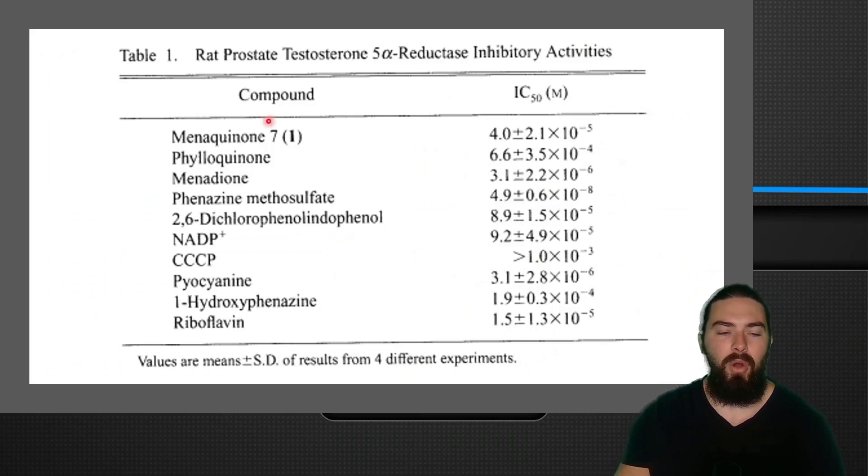So this was the compounds that they looked at in the study, and the lower the number, the stronger the inhibitory effect is. And all of these are electron acceptors. So riboflavin here is one of the strongest electron acceptors or inhibitors. So riboflavin was one of the most potent inhibitors of 5-alpha reductase, because it seems to be one of the most potent electron acceptors in this case.